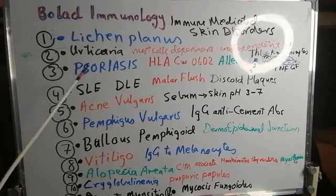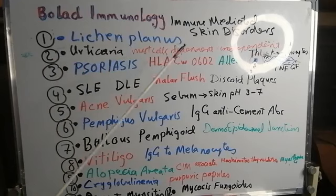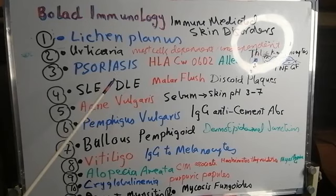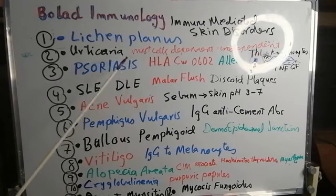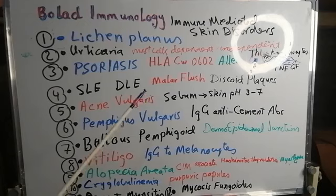These mediators lead to pruritus. Urticaria can also be mast-cell-independent, as in hereditary angioneurotic edema. This is due to deficiency of complement component number one inhibitory factor, which leads to ongoing activation of the complement system and swelling of, for example, the lips and throat, and may lead to suffocation.